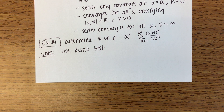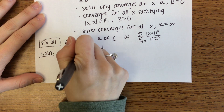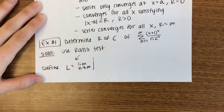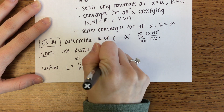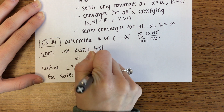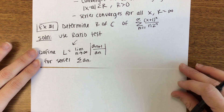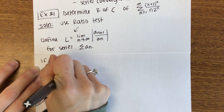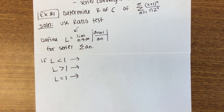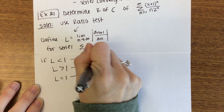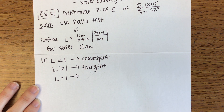Let's do a quick review of the ratio test. Define L to be the limit as n goes to infinity of the absolute value of a_(n+1) over a_n for the series that is the summation of a_n. There are three possibilities: if L is less than 1, the series converges; if L is greater than 1, the series diverges; if L equals 1, the test is inconclusive.